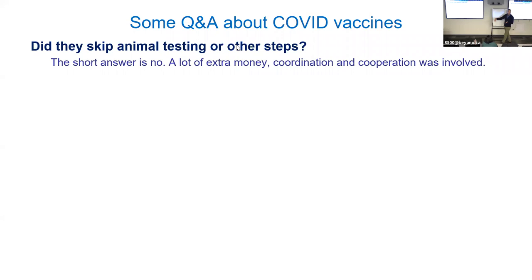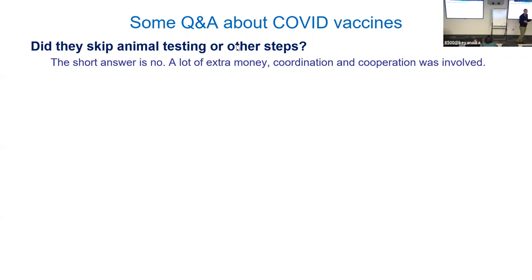The typical timeline from animal testing to phase three clinical trials is about three to four years because of red tape. To accelerate, you run phases in parallel rather than sequentially. For the phase three clinical trials, recruiting 60,000 volunteers and getting vials and clinics costs hundreds of millions of dollars — with no guarantee of success at that step. That's kind of what they did for these COVID vaccines. The safety steps weren't skipped; the waiting time between steps was eliminated.